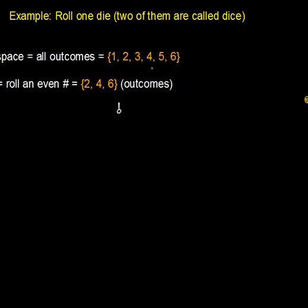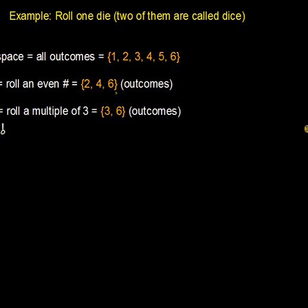Let's look at one possible event when you roll one die. Event A could be that you roll an even number, and the possible outcomes would include two, four, and six. Another possible event, event B, might be rolling a multiple of three, and the possible outcomes there include three and six.